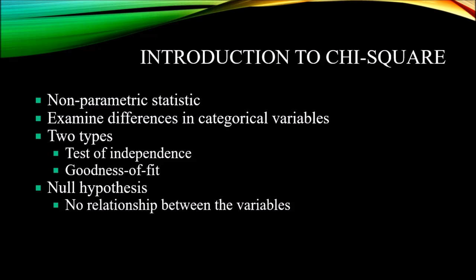We use the test of independence when we have two variables and we want to see if there's a relationship between those variables. We use the goodness of fit when we have one variable, one set of observations, and we want to compare that to the expected observation. I'll give examples for those two types in a moment.